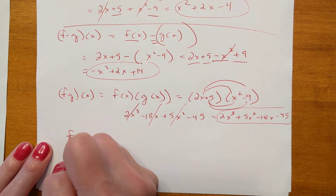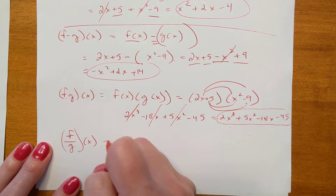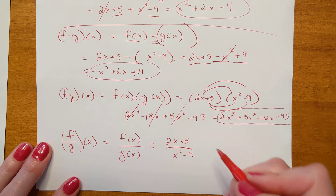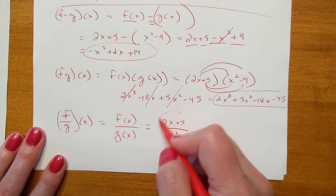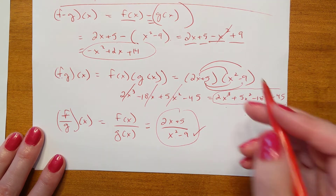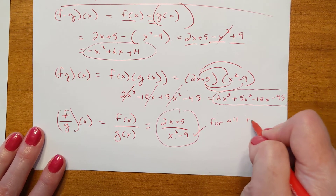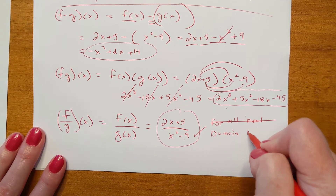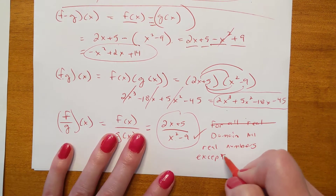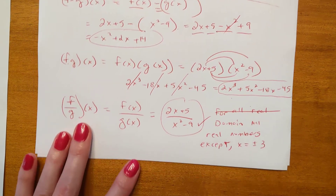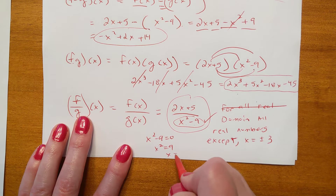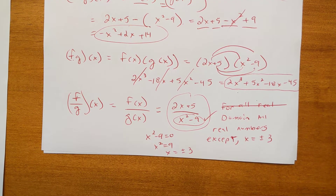Then f divided by g of x — that's just f(x) over g(x). f(x) was 2x plus 5, g(x) is x squared minus 9. That's the answer, but you can't divide by zero. This function is undefined for x equals 3 or negative 3 because those make the denominator zero. Domain: all real numbers except x equals plus or minus 3. Set the denominator equal to zero and solve — you get two answers since 3 squared and negative 3 squared both equal 9.